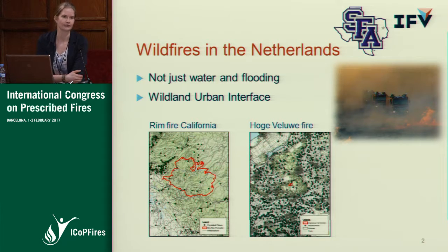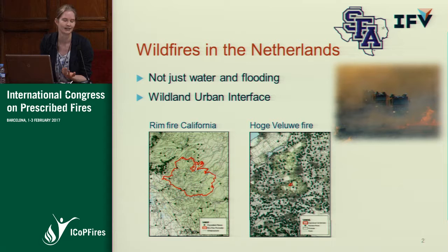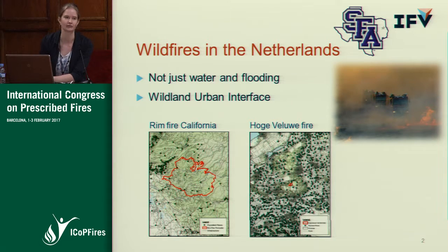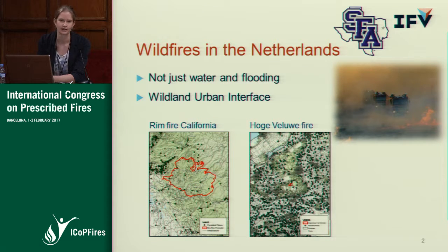I'd like to tell you something about wildfires in the Netherlands, also known as Holland. We're really well known for water and flooding, so when I tell people I'm working on wildfires and that I'm from the Netherlands, they're sometimes kind of confused. But even we have wildfires — they happen every year, on a much smaller scale than in America or Australia. But because we have a really significant wildland-urban interface, even small wildfires can cause major issues.